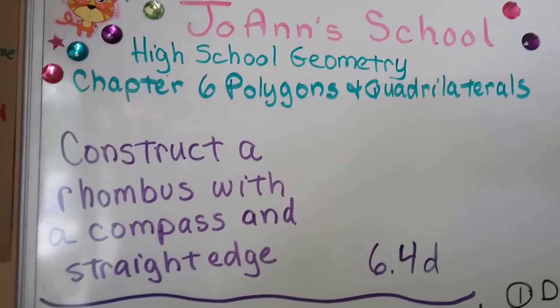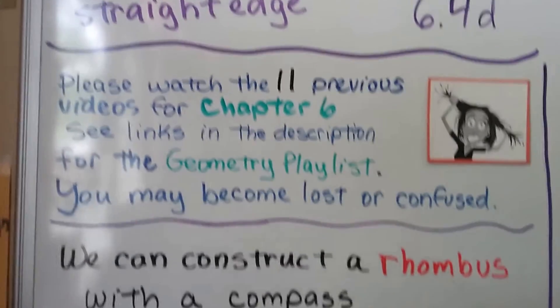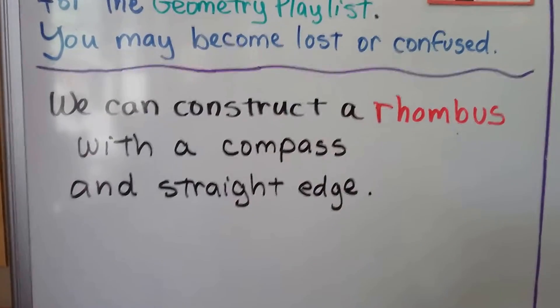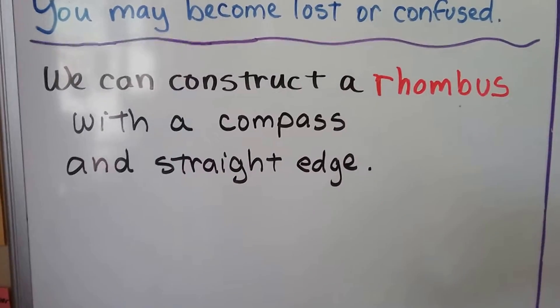We're going to construct a rhombus with a compass and a straight edge. So I hope you have a compass with you and at least a protractor or a ruler of some kind of straight edge.